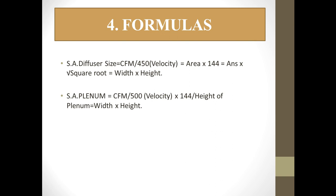Supply air plenum is used to connect two ducts or connect flexible ducts in HVAC ducting design. To calculate supply air plenum size: Supply Air Plenum = CFM / 500, where 500 is the standard velocity. Multiply the result by 144, then divide by the plenum height to get the width. This gives you the width, height, and length of the plenum. Thank you for watching my channel.